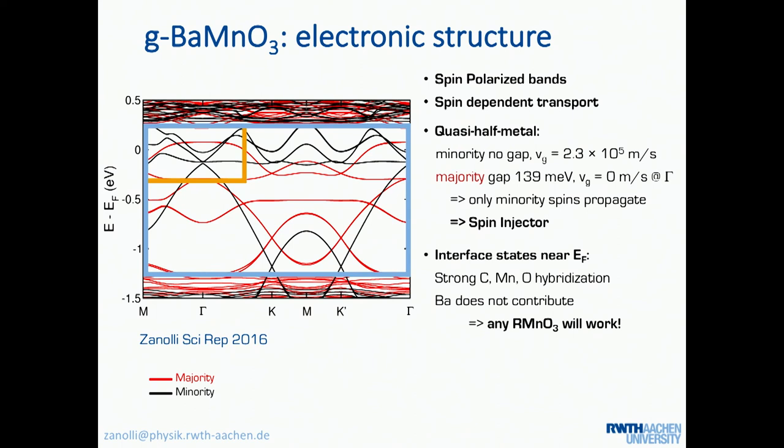Overall, all the bands that are here, not so far from the Fermi level, they are contributed by the interface atom only. So, these are already just properties of the interface. And it's, of course, the graphene, but the manganese at the surface, the oxygen near to the manganese, and all the rest, the inner ones, they do not contribute. In particular, barium does not contribute at all because it's like 5s electron, very low in energy, so any other rare earth manganese oxide will do the job because what is important here is the interface with the manganese.